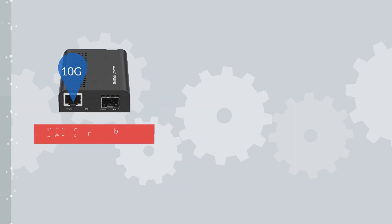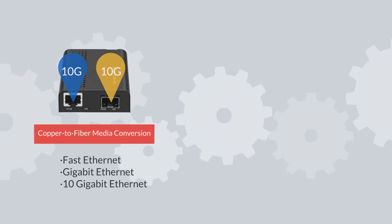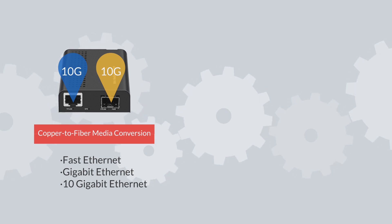A copper-to-fiber media converter provides connectivity to Ethernet, fast Ethernet, gigabit, and 10 gigabit Ethernet devices.